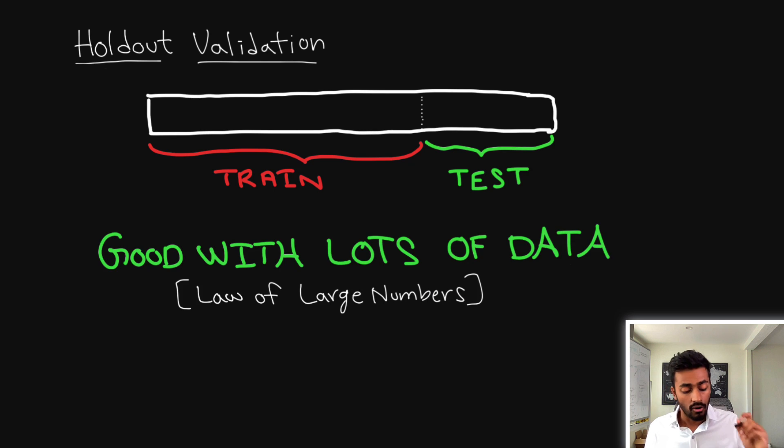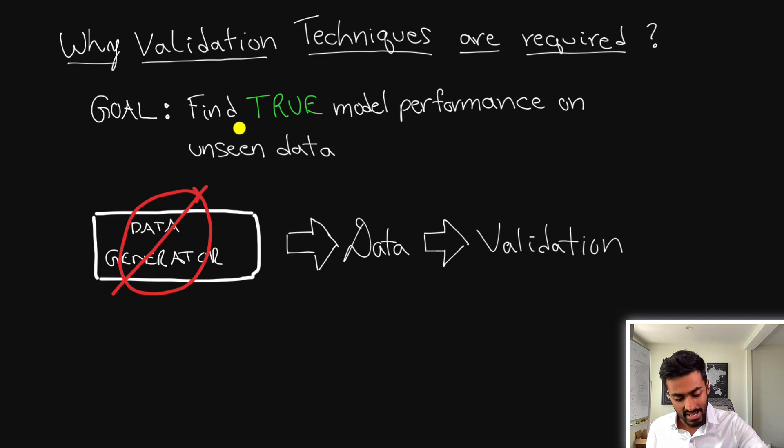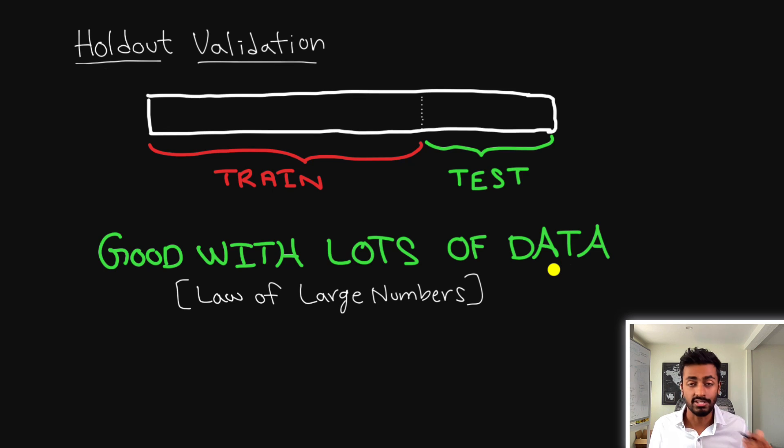However holdout validation is pretty reasonable with lots of data available. And this is because of the law of large numbers. This is a statistical principle that essentially states that as this test set goes on increasing the average or rather the mean squared error of this sample is going to be representative of the true unseen mean squared error of the population. And based on our true goal that's exactly what we want. And so holdout validation can actually work pretty well when you have a lot of data.